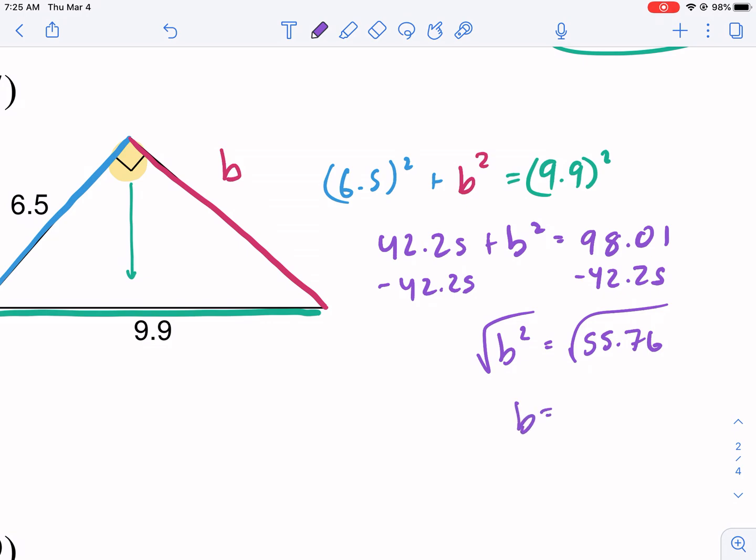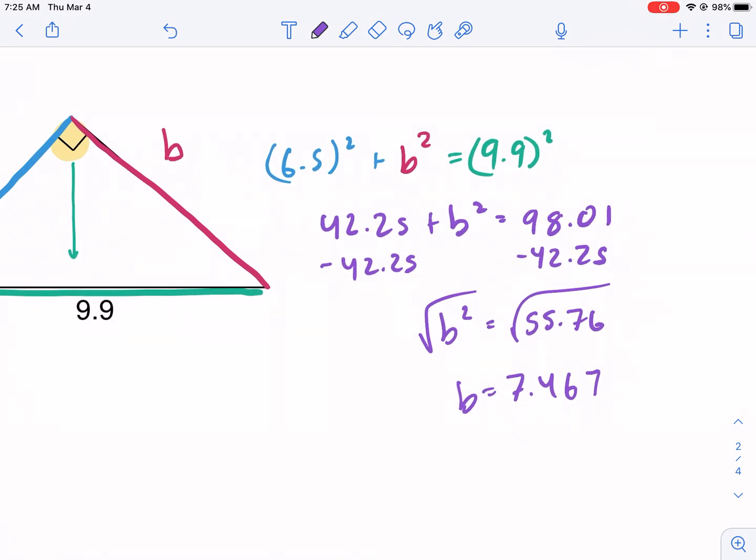And we get B equals 7.467. We need to round to the nearest tenth. So here's our tenths place. We have a 6 next to it. This tells it to round up. B equals 7.5. There's our final answer for B.